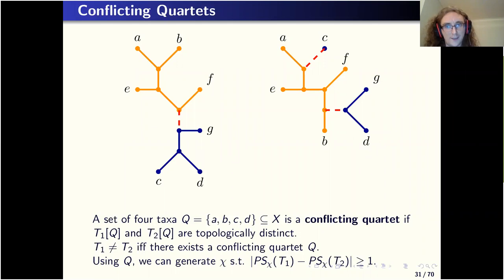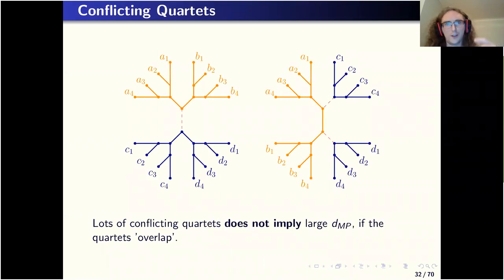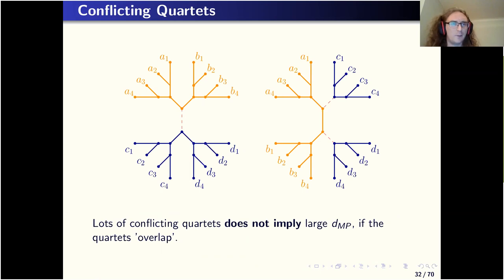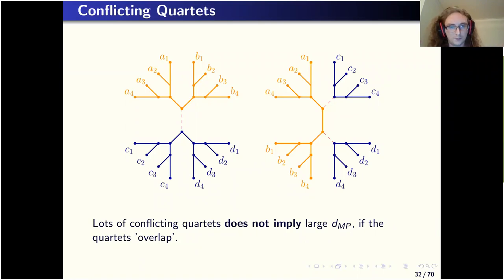Having one conflicting quartet means you have DMP at least one, but having two conflicting quartets doesn't necessarily mean DMP at least two. You can build instances with many conflicting quartets but DMP only one. For example, if you take any A, B, C, D from two particular trees, they form a conflicting quartet, but the maximum parsimony distance between those two trees turns out to be only one.